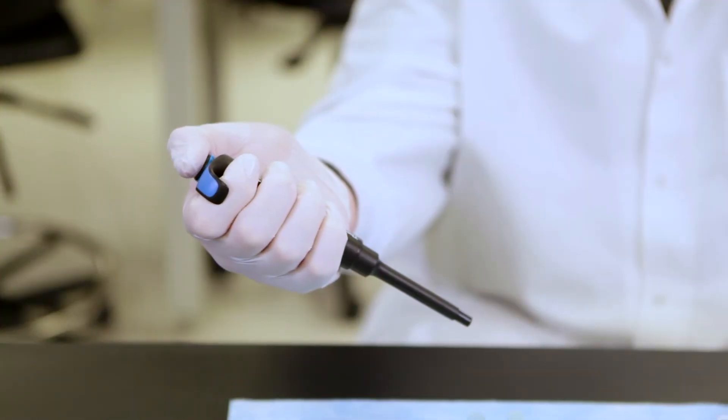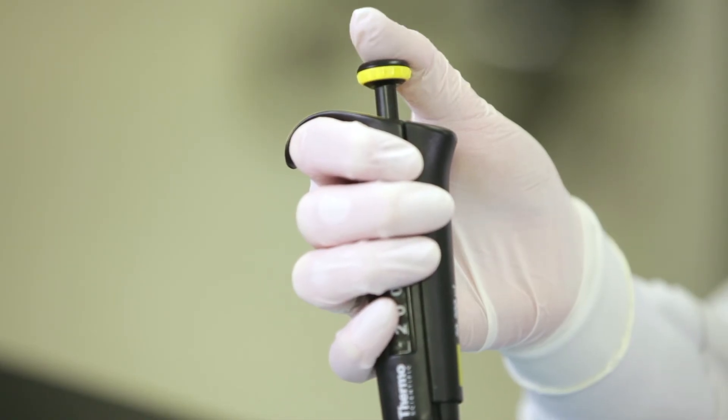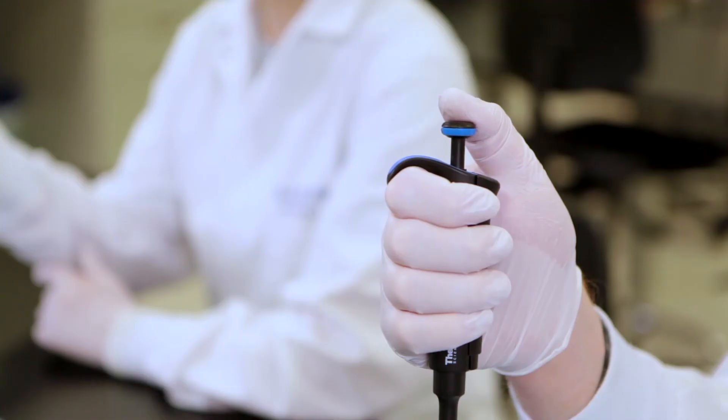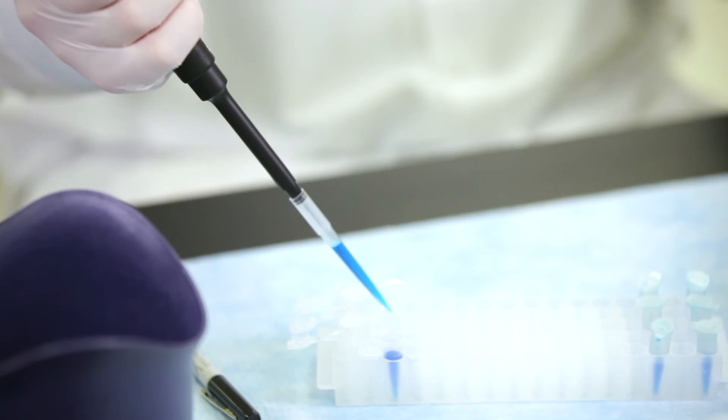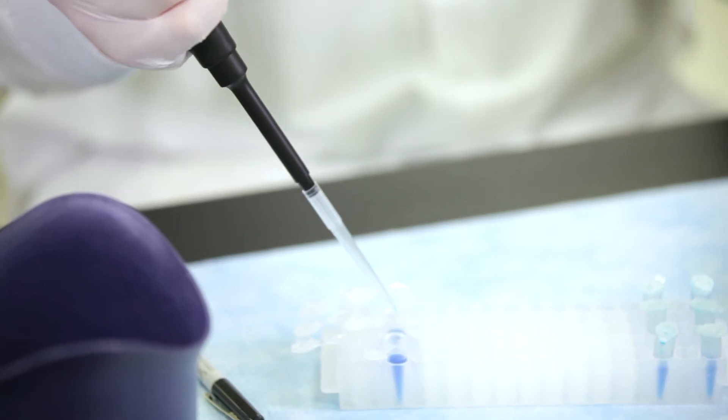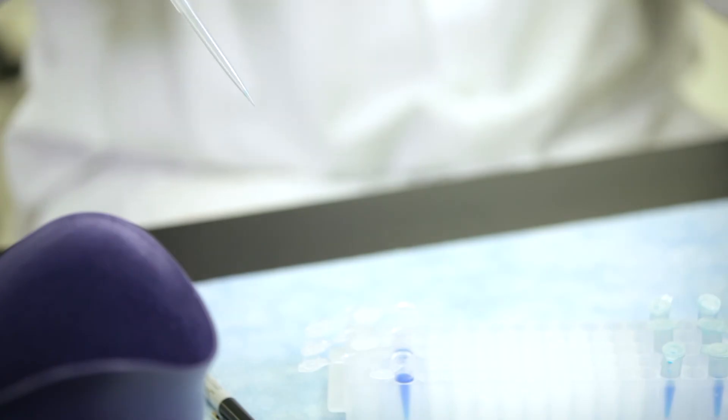To use the pipette, depress the push button until you feel some resistance. This is the first stop. Place the pipette into the liquid and slowly release the button. To release the liquid from the pipette, push past the first stop to fully expel the liquid from the pipette tip into the recipient container. Before you release the push button, withdraw the pipette from the container.